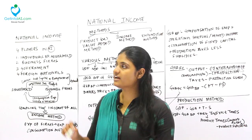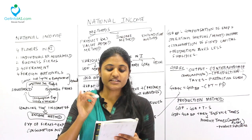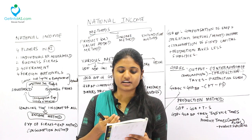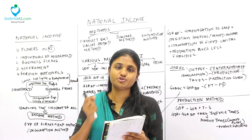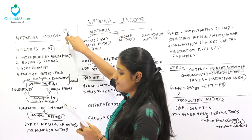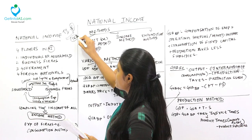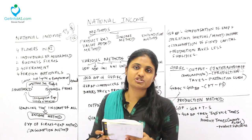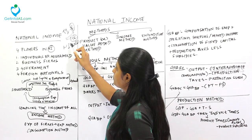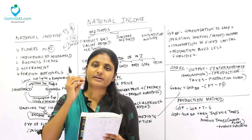Welcome to Get into IAS. In this video we are going to deal with the lesson national income. National income of a country is the total income generated by the residents of the country in its economic territory in a particular period of time, usually one year. The growth of the national income helps to know the progress of the country, so the national income of last year will be connected with this year to measure growth.